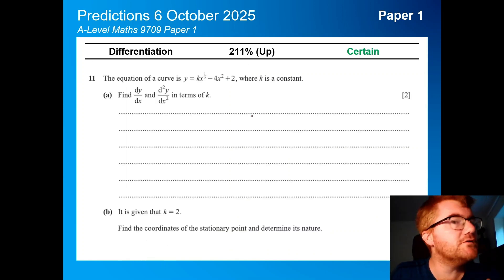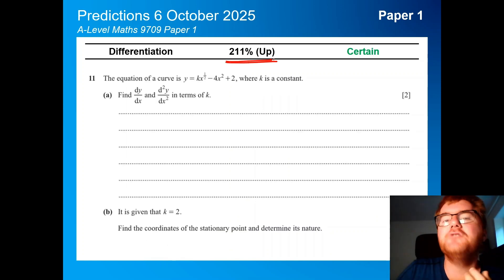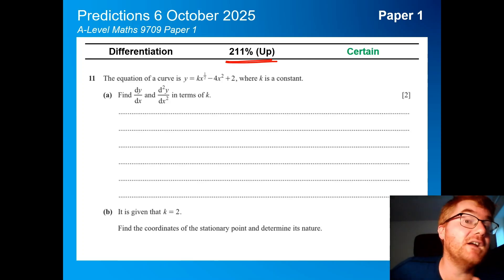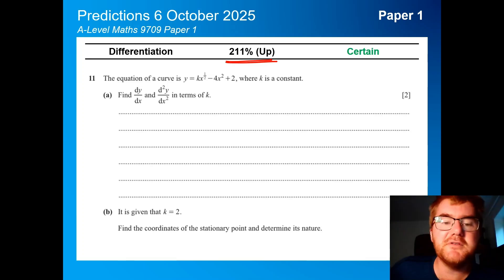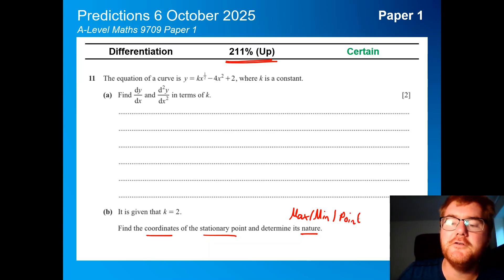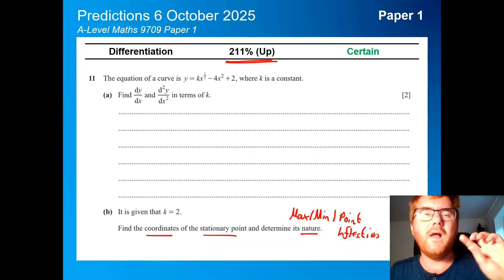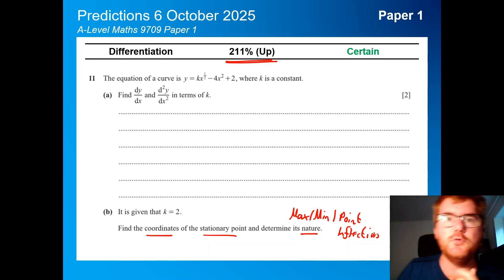On to differentiation, also towards the end, again, a whopping 211%, because it's often integrated, that's not a pun, into integration questions. You often have to use differentiation within them. This is very typical, so we're working out the first and second derivative in terms of k, and then we're actually working out the coordinates of the stationary point given k, and then determine its nature. So is it a max, is it a min, or point of inflection? You can do that in a few different ways. You can use the second derivative, or you can use this idea of when the gradient changes from plus to minus as well.